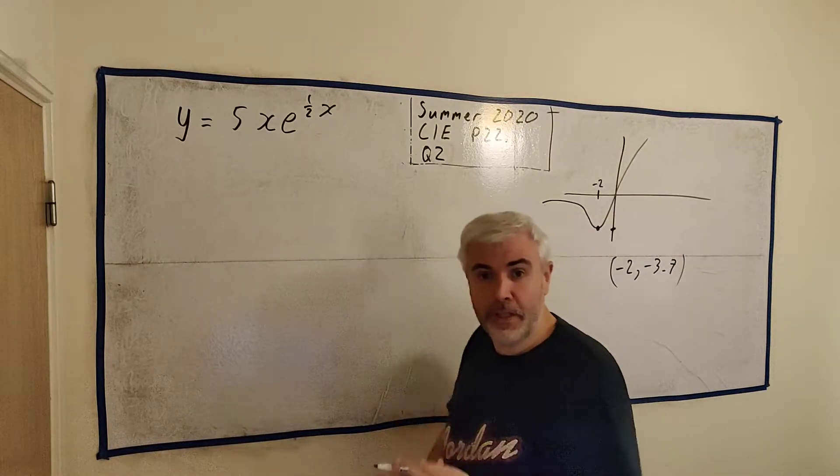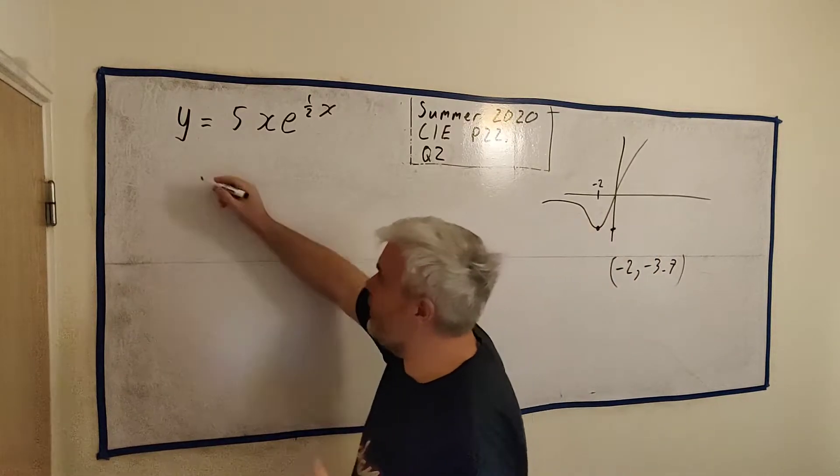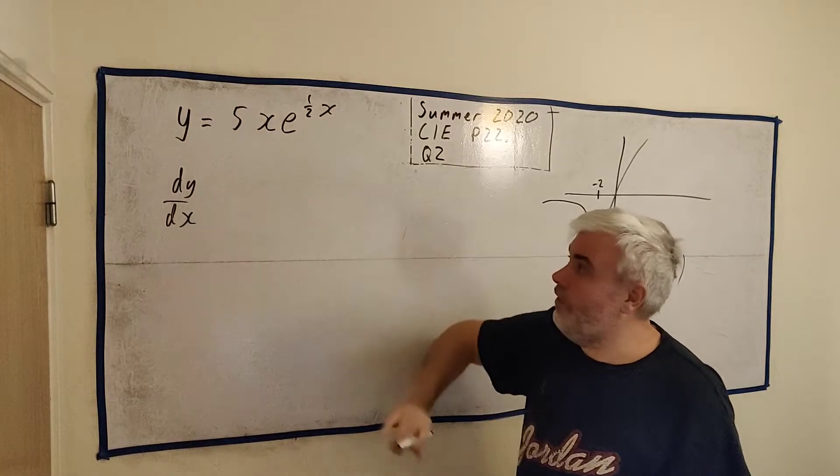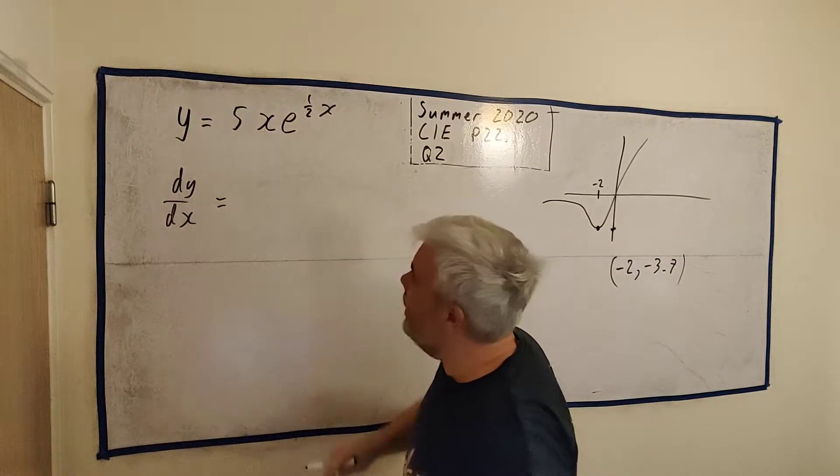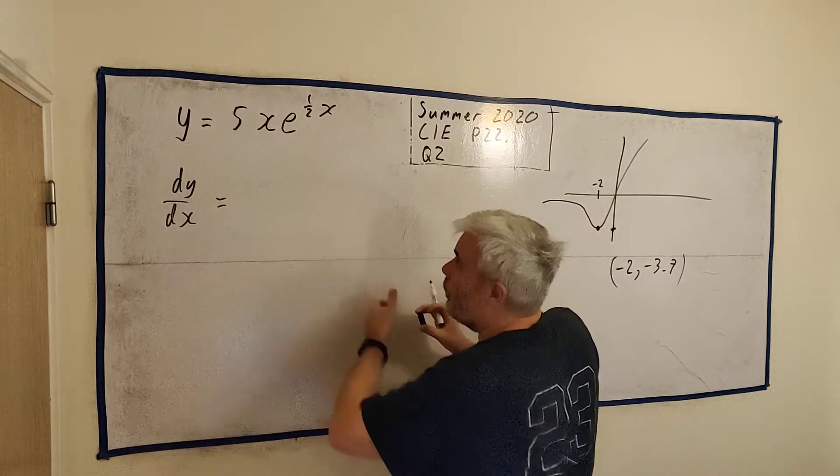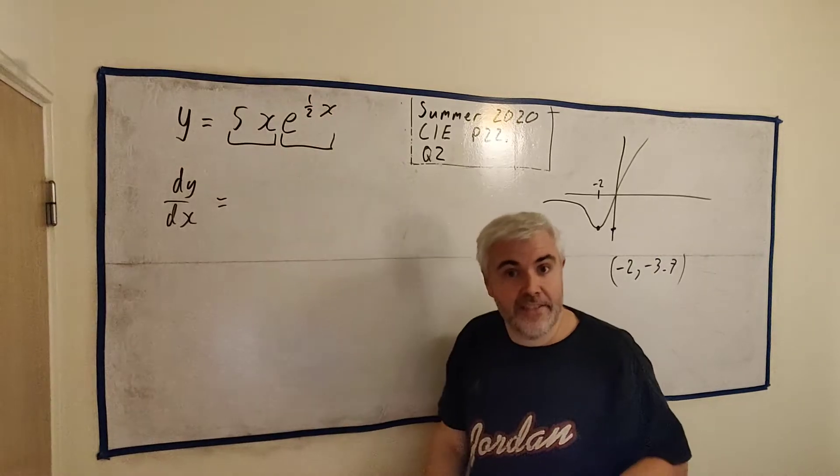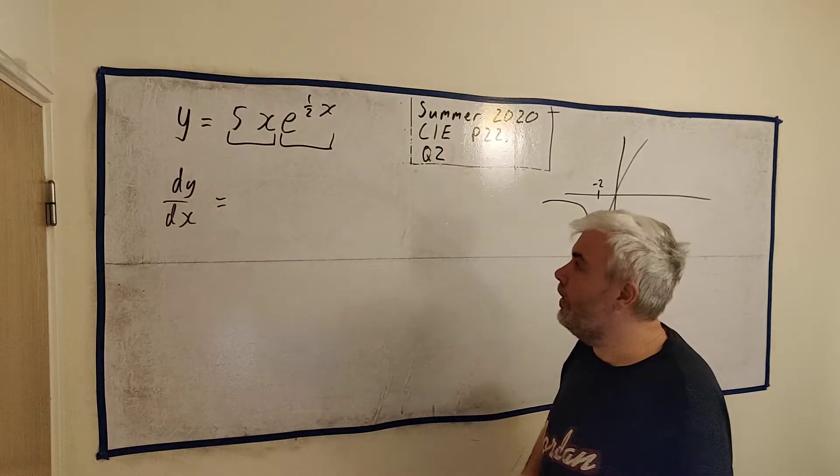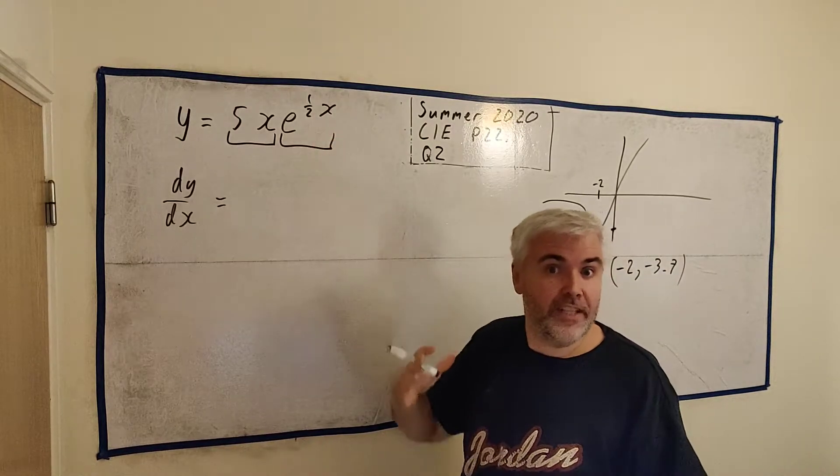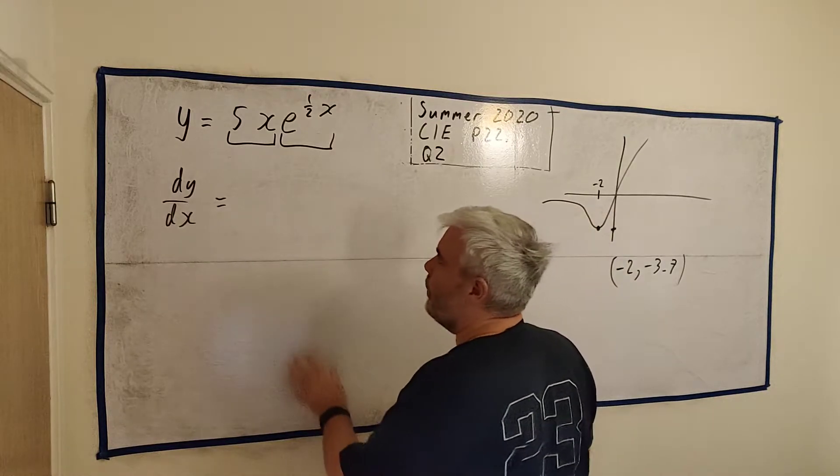Now, like I said, we don't actually need that because when we hear stationary point, the first thing we should be jumping to think of is differentiation, dy/dx. So dy/dx of this is what we're looking for. Now that's a hard-ish question. It's a product rule.